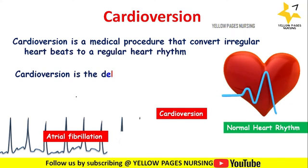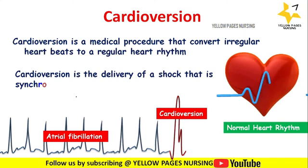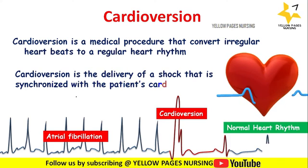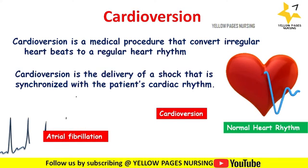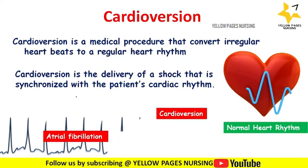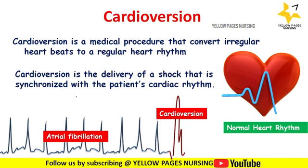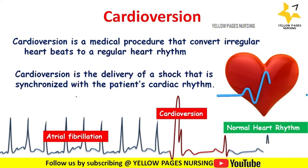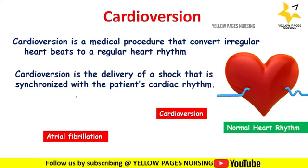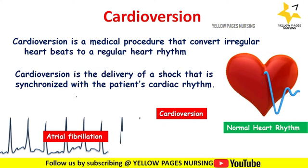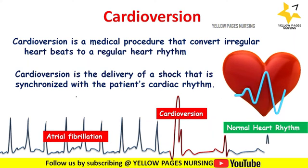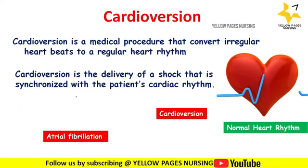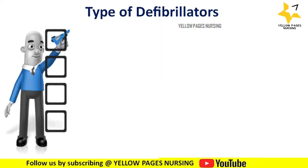Cardioversion is a medical procedure that converts irregular heartbeats to a regular heart rhythm. It is the delivery of a shock synchronized with the patient's cardiac rhythm. Cardioversion has been discussed in detail in a previous video, with the link given in the description below.